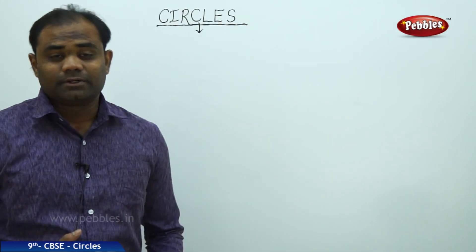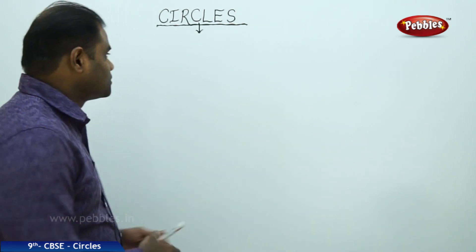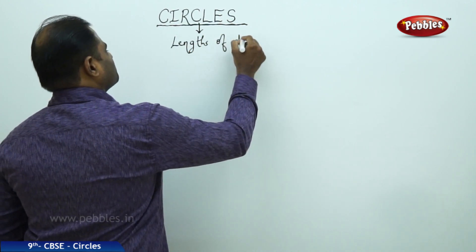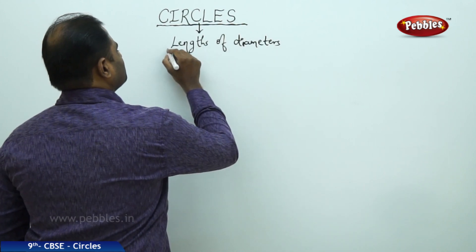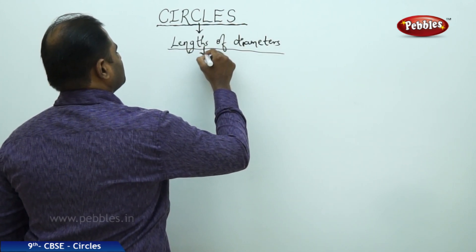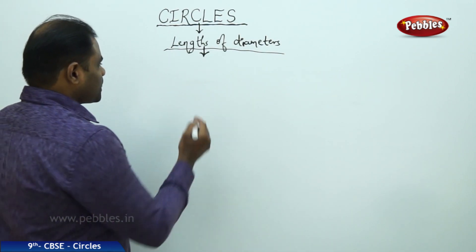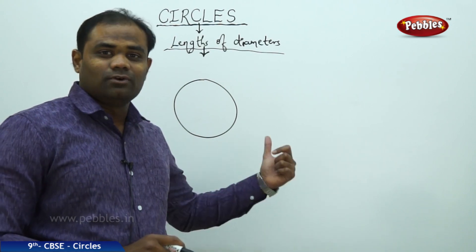Now that we have defined a diameter and the possible number of diameters which can be drawn for the circle, let us see by taking into consideration two different diameters and see if the lengths are equal. This session is about investigating the lengths of the diameters for the given circle.